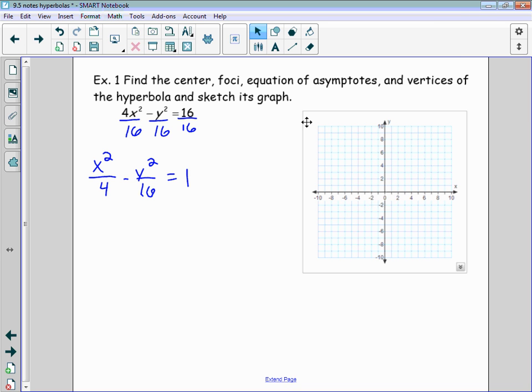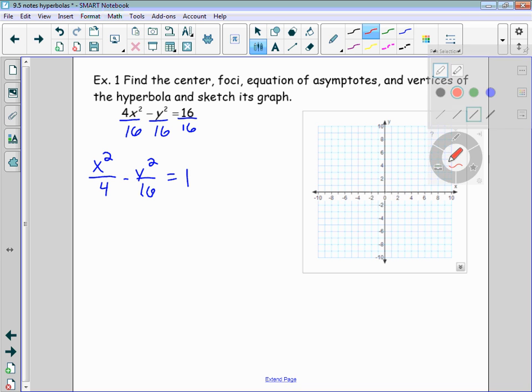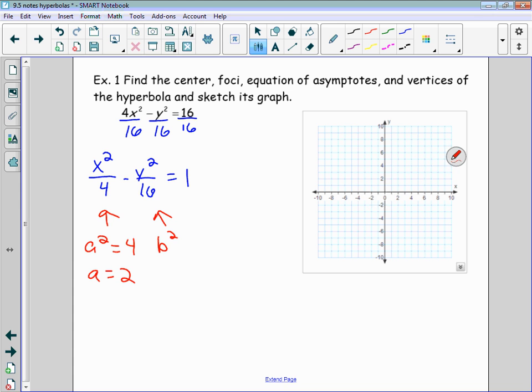So the value of a² is always here in the hyperbola, right? So a² equals 4, that means a equals 2. And this will always be the value of b². So b² equals 16, which means b equals 4. With a hyperbola, you don't have to look to see which one's bigger. It will always be oriented in that format.